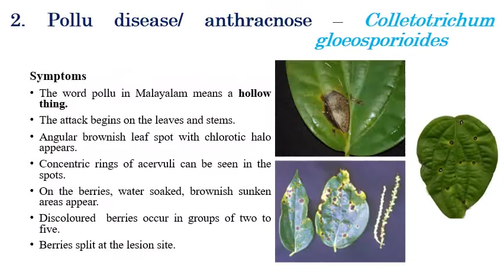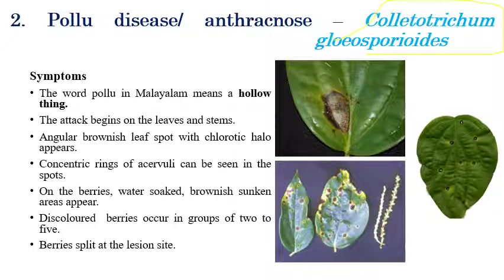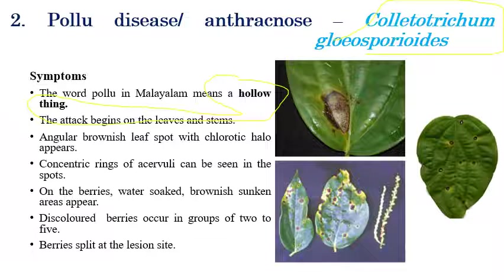The second disease is pollu disease or anthracnose, caused by Colletotrichum gloeosporioides. 'Pollu' is a Malayalam word meaning hollow thing. The symptoms can initially be seen on both leaves and stems.